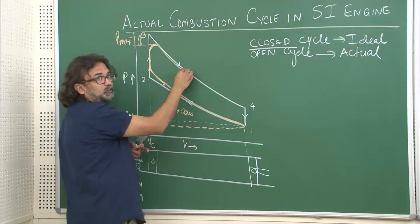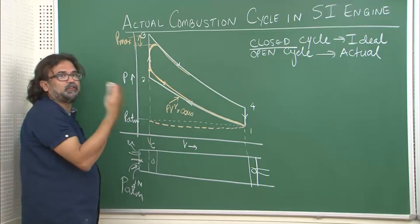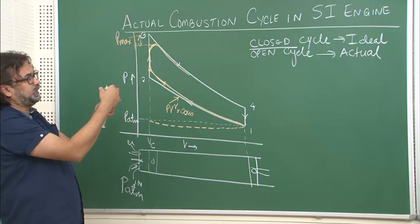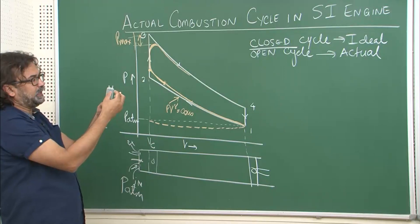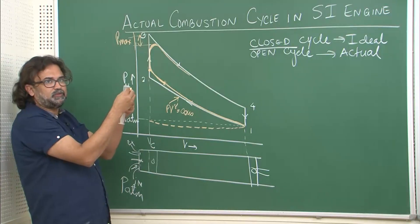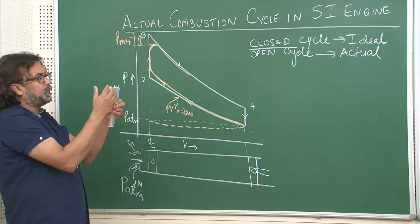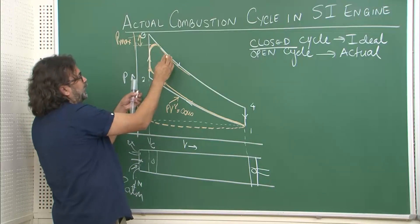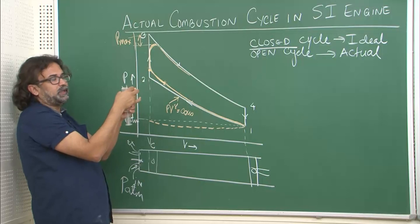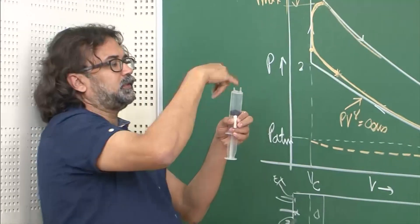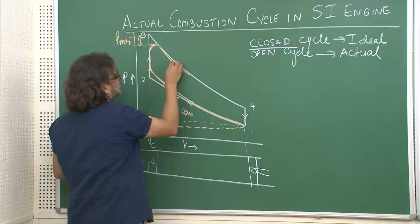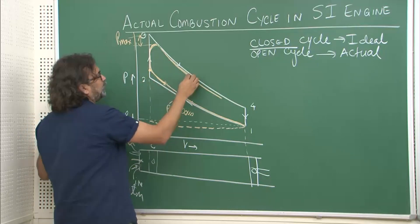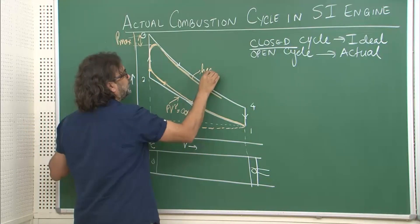The expansion stroke will also not be exactly adiabatic because the engine cooling system — water flowing around the combustion chamber — causes continuous heat transfer from the hot gases to the coolant. So some fraction of the heat is lost during expansion due to this heat transfer across the cylinder walls, further deviating the real cycle from the ideal.